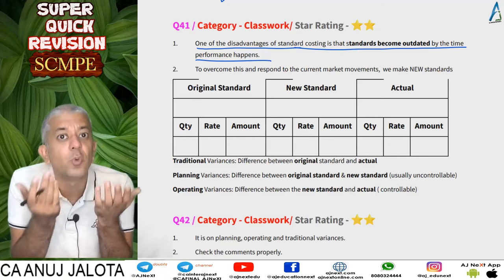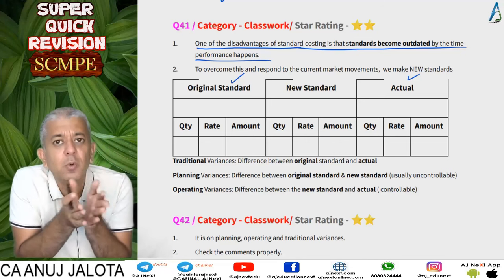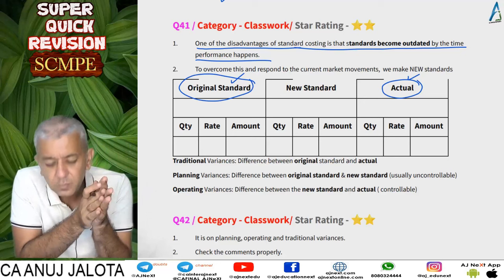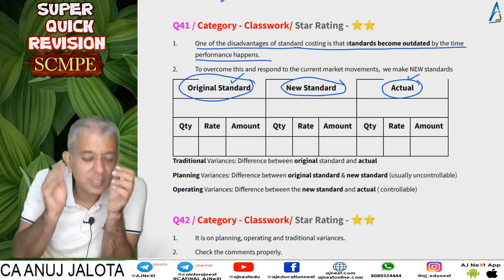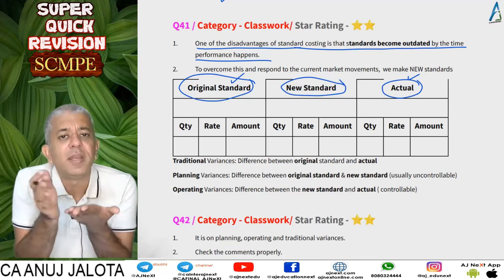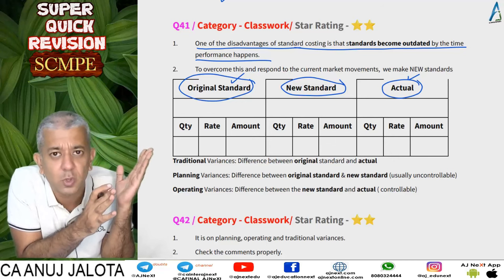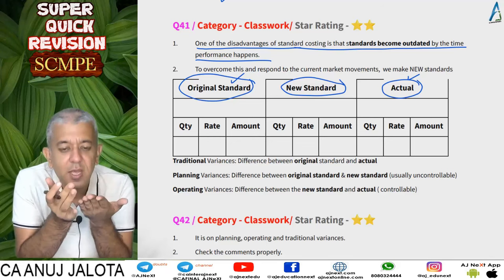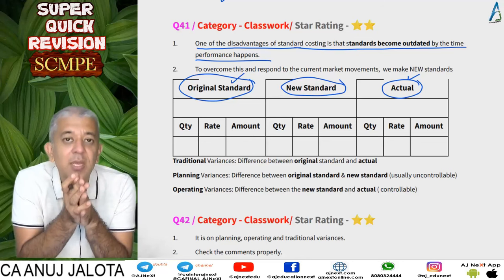This becomes a big drawback for companies following standard costing because actual data and standards should be comparable — but they are comparable only if conditions when performance happens are the same as when standards were set. To overcome this disadvantage, we revise the standards and call them new standards. For example, if standards were made in April and by October conditions were totally different, we make a new standard based on October's conditions.